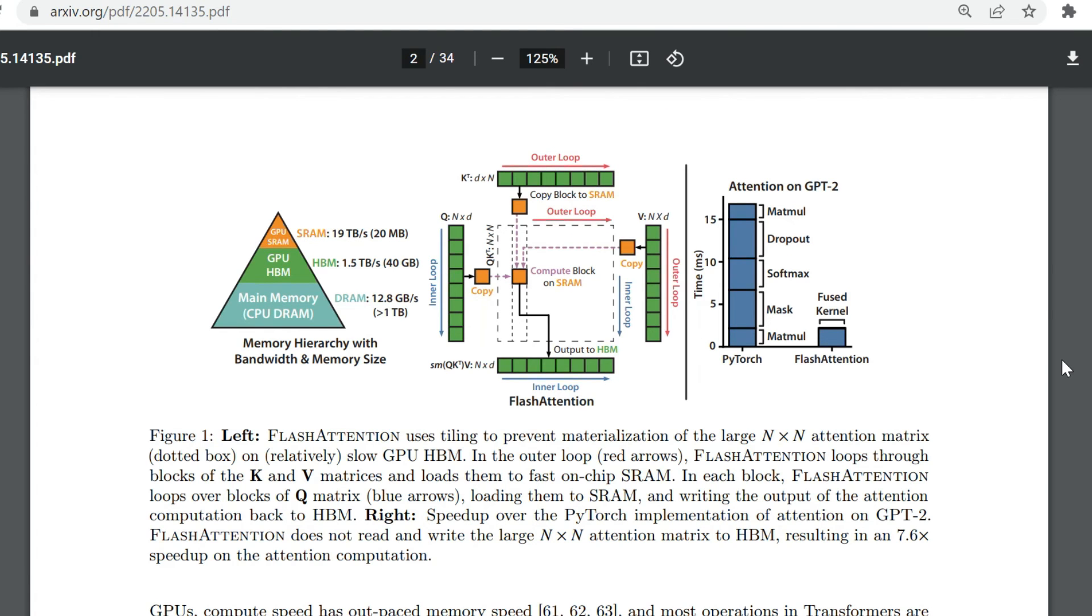One popular way of implementing this is called flash attention. Not only does it fuse together these operations, but flash attention also does some tiling and some optimization according to the GPU's memory hierarchy to further reduce the amount of time needed to perform this operation. And you can see on the chart on the right here that the fused flash attention is a lot faster than naively doing all of the operations sequentially in PyTorch.